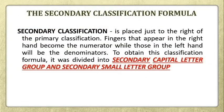The secondary classification is placed just to the right of the primary classification. Fingers that appear in the right hand become the numerator, while those in the left hand will be the denominators. To obtain this classification formula, it was divided into the secondary capital letter group and the secondary small letter group. Unlike the primary classification where odd numbers are the denominator and even numbers are the numerator, in the secondary classification the numerator are the fingers located in the right hand while the denominator will be the fingers located in the left hand, or fingers number six to ten.